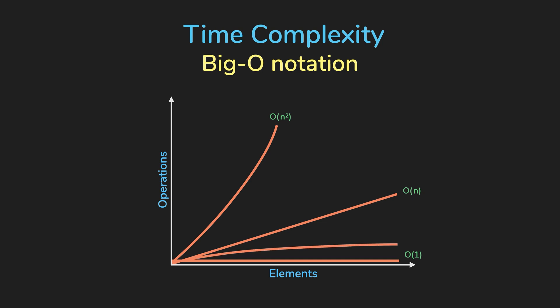There is also logarithmic time complexity, O of log N. A common example for this is when the input size is divided into half for each loop. So the number of loops we need to run will be less than just a normal loop.